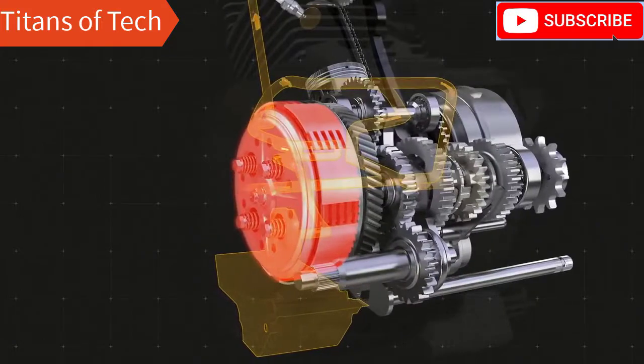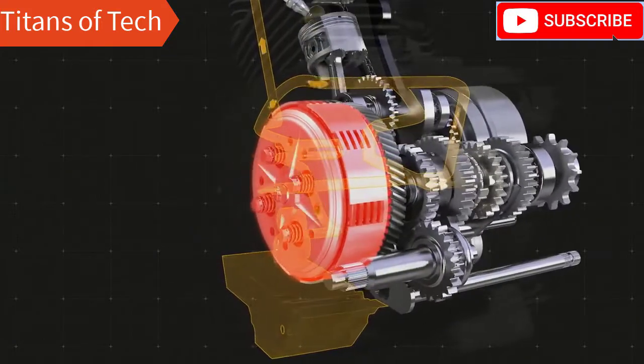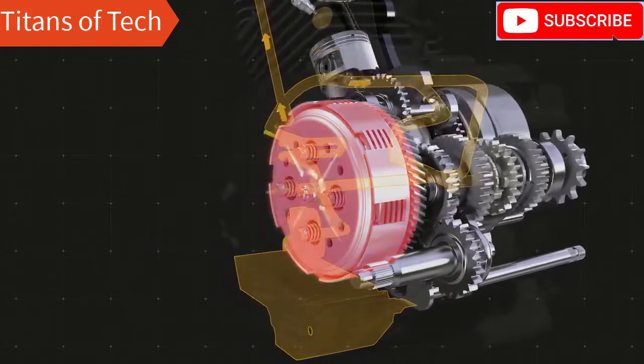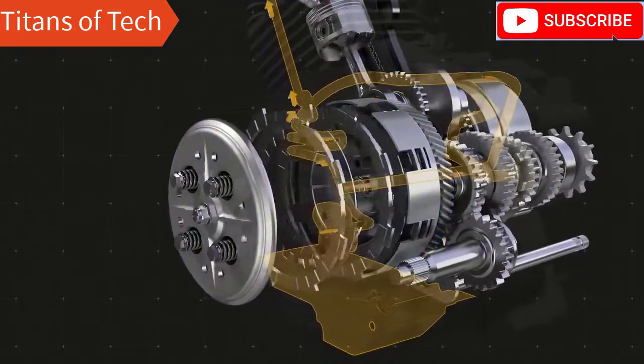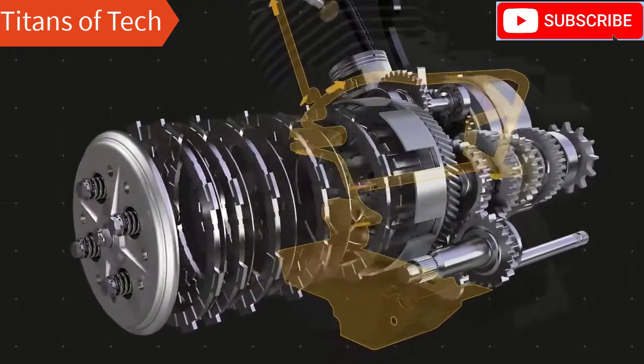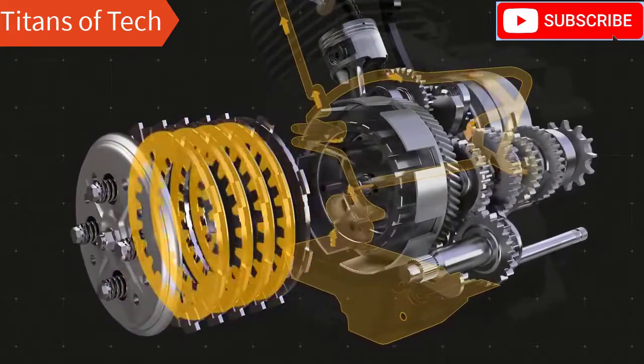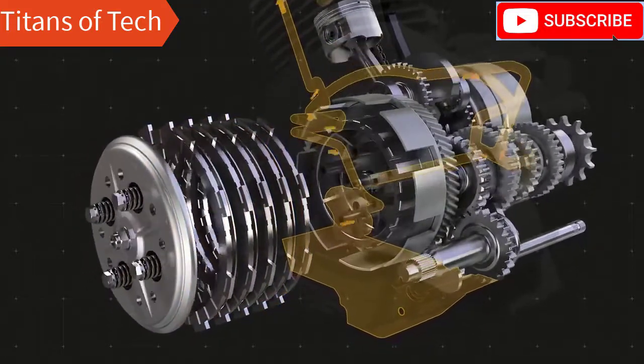In the clutch, the oil's versatility is tested even more. While cooling remains a key function to prevent overheating, the lubricant must also allow for the right amount of friction between the plates and discs for the mechanism to function properly when engaged.